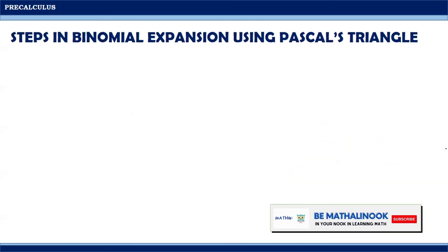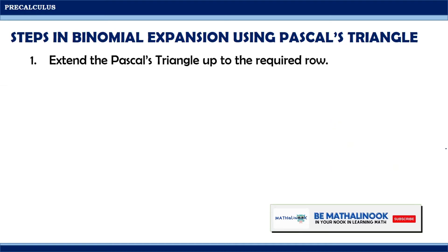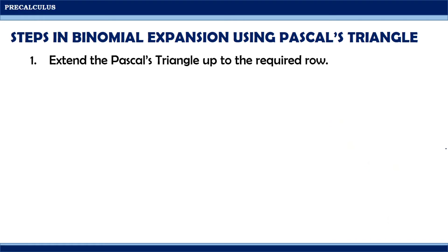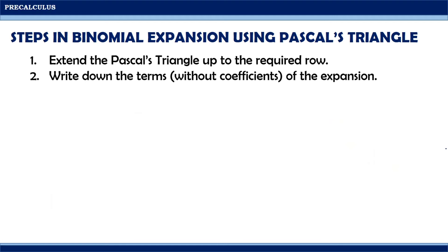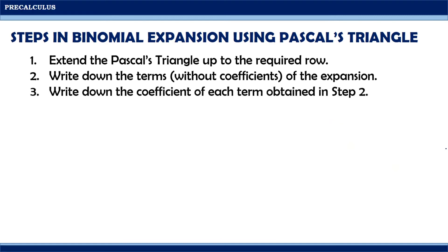These are the steps in binomial expansion using Pascal's Triangle. Step 1: extend the Pascal's Triangle up to the required row. Step 2: write down the terms without coefficients of the expansion. Step 3: write down the coefficient of each term obtained in step 2. And step 4: add all the terms in step 3.